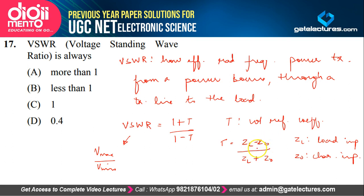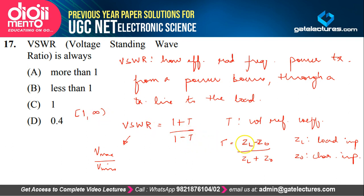When the transmission line is matched — meaning the load impedance equals the characteristic impedance — the voltage reflection coefficient γ equals 0, and VSWR equals its minimum value of 1. In any other case, VSWR is always greater than 1. The minimum value is 1, and it can go up to infinity when γ becomes 1. So this ratio is always greater than or equal to 1.